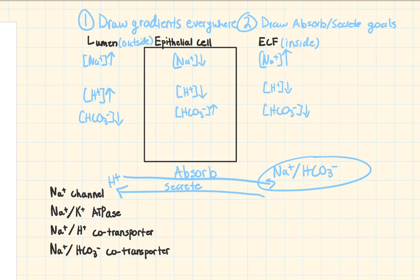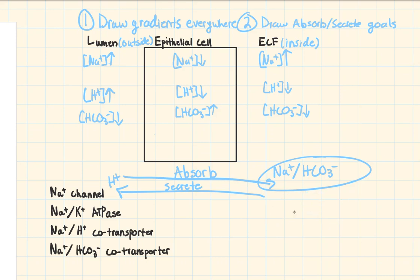You should never draw sodium going to the left — same with bicarb. You actually need to complete this goal: you need to show sodium and bicarb getting into the ECF, and you need to show hydrogen entering the lumen. Those things must be shown in this diagram.